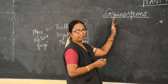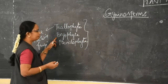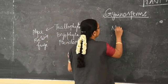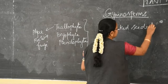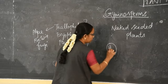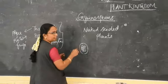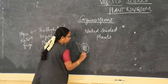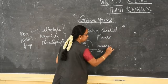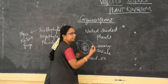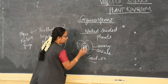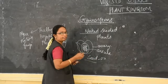Now we move on to Gymnosperms. The next division is Gymnosperms — Thallophyta, Bryophyta, Pteridophyta, and then Gymnosperms. Gymnosperms are known as Naked Seeded Plants because in them the ovule is not surrounded by the ovary. The seeds are exposed; they do not have any outer cover. So, naked means open — open seeded plants. Their ovule is not surrounded by the ovary.